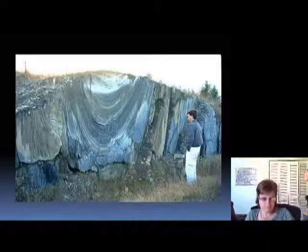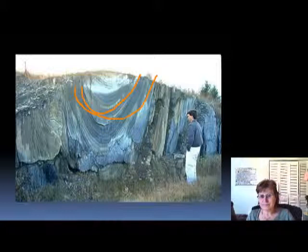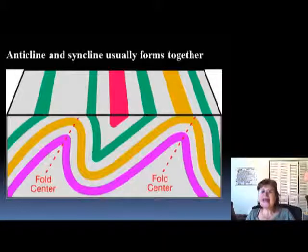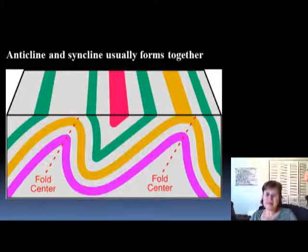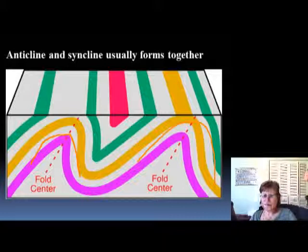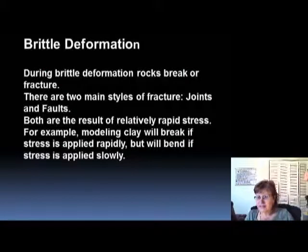You can clearly see that it's a down-arching — it's actually a symmetrical syncline. On this slide you can see that usually the syncline and anticline go hand in hand, so you will find them together. This one is an asymmetrical anticline, and this is an asymmetrical syncline.